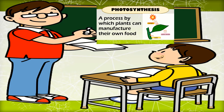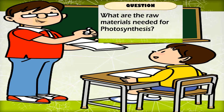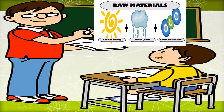Photosynthesis is a process by which plants can manufacture their own food. Very good, Marco! Now, what are the raw materials needed for photosynthesis? The raw materials needed for photosynthesis are the following: first, radiant energy; another one is water in the form of H2O; and last is carbon dioxide.